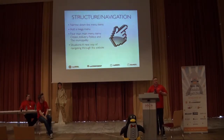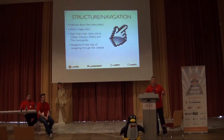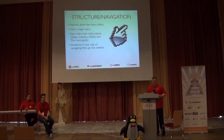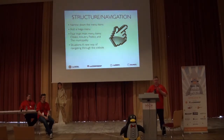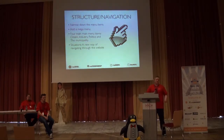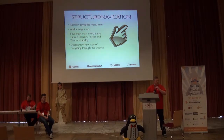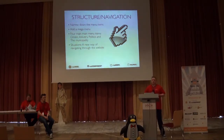We also had to think about structure. The old site had so many options, so we had to narrow down the menu items. We ended up with only four main menu items: one for citizen, one for industry, one for politics, and one for the municipality. We hid the other areas in the mega menu, so when you click on, say, Citizen, you can choose Family and Children if that's the area you want. We simplified the site but made it easier to navigate.